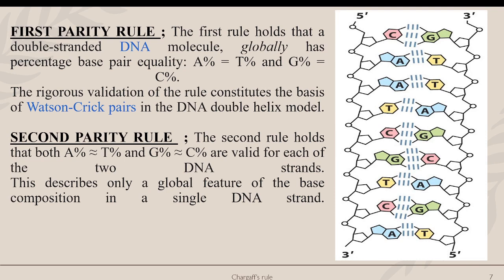Second parity rule: the second rule holds that both A% approximately equals T%, and G% approximately equals C%, and are valid for each of the two DNA strands. This describes only a global feature of the base composition in a single DNA strand. Thank you.